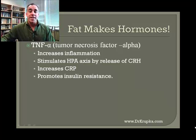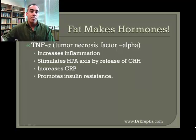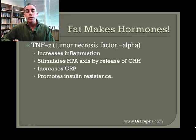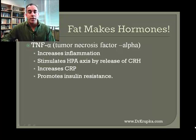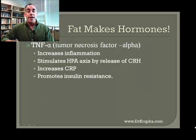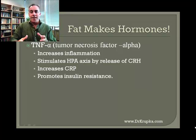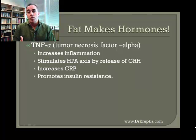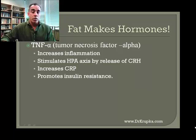Tumor necrosis factor alpha, or TNF-alpha, increases inflammation and stimulates the HPA axis — the hypothalamic-pituitary-adrenal axis. It also increases CRP, a marker for inflammation, and it promotes insulin resistance. Insulin resistance is that pre-diabetic metabolic syndrome — where you stop reacting to insulin the way you're supposed to and start losing control of your blood sugar. This sets you up for full-blown type 2 diabetes.